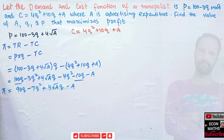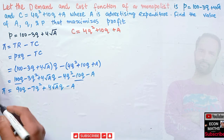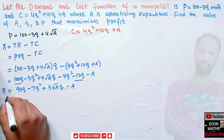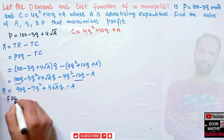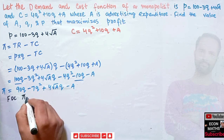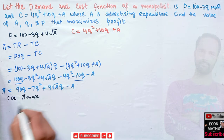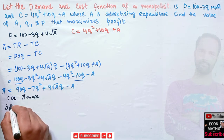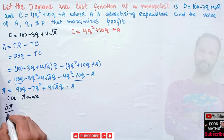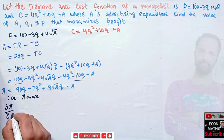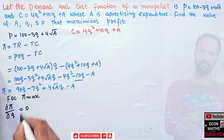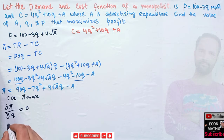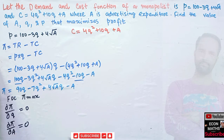Now we need to find out the profit maximizing level of expenditure and output. There will be two first-order conditions. The first condition requires the derivative of the profit function with respect to output Q to equal zero. The second condition requires the derivative of the profit function with respect to advertising expenditure A to equal zero.